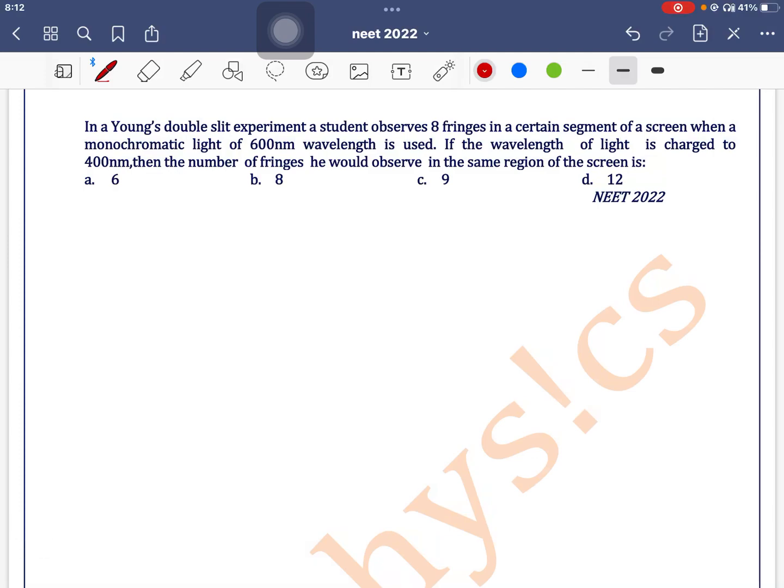In Young's double slit experiment, a student observes 8 fringes in a certain segment of screen when a light of 600 nanometer wavelength is used. If the wavelength of light is changed to 400 nanometer, the number of fringes you would observe in the same region of the screen is...